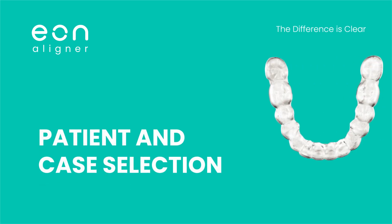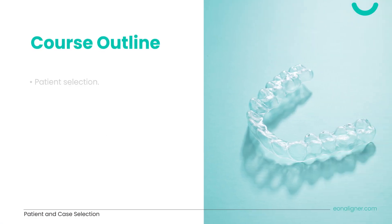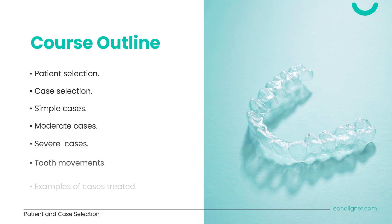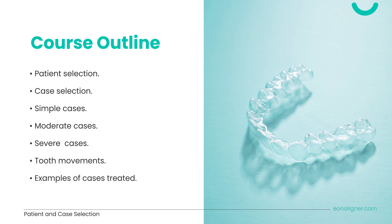This module covers patient and case selection for aligner therapy. Topics include the evaluation of patients as candidates for aligner therapy, the selection of the proper case, and cases of variable difficulty — simple cases for initiators, moderate cases for experienced users, and severe cases for advanced users. The module ends with an explanation of tooth movements and examples of cases treated with Eon aligners.